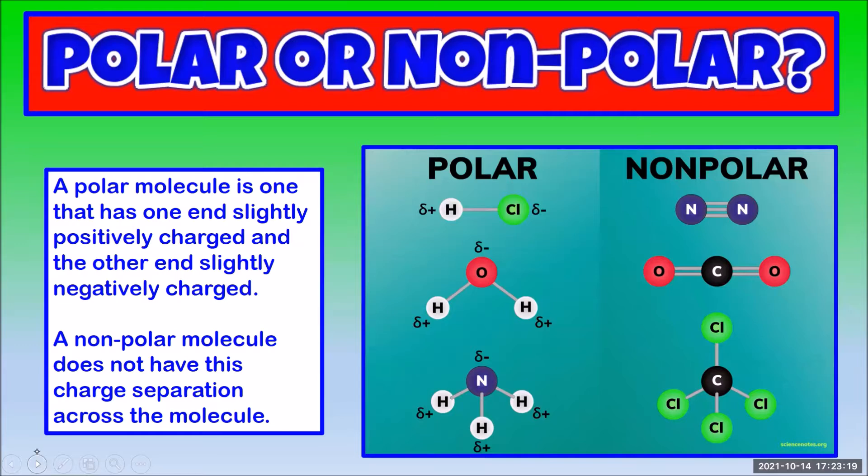As you can see we use the delta plus and delta minus on the bonds in the molecule to show polarity. We learned about those in our previous video on polar bonds.